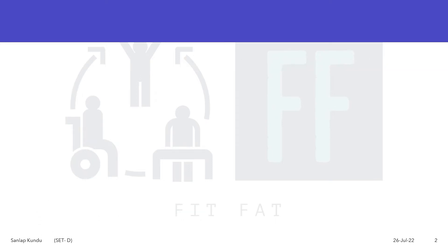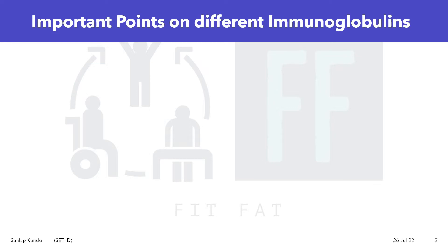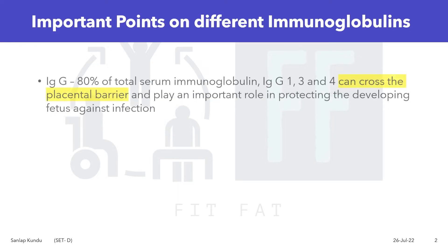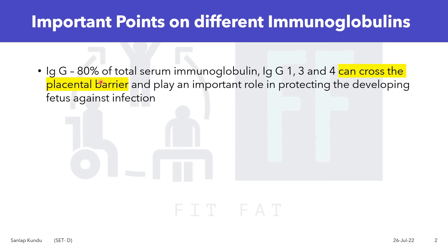Now let's see some important points on different immunoglobulins. First in the list comes IgG. IgG constitutes 80% of the total serum immunoglobulin.